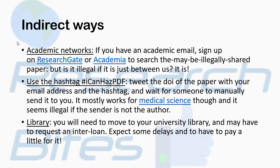Some other indirect methods: you can get articles from academic networks. If you have a university email, you can register on ResearchGate and get articles from there too. Also, a very interesting method that has been happening for many years — the hashtag #icanhazPDF on Twitter. You simply mention the DOI number and your email address with the hashtag #icanhazPDF, and someone who has access to that article will download and send it to you. Lastly, you can go to your university library, as most libraries have access to databases where you can get the article.